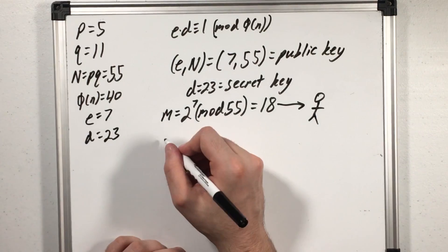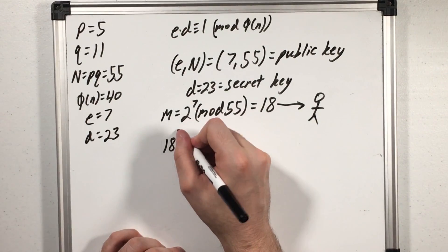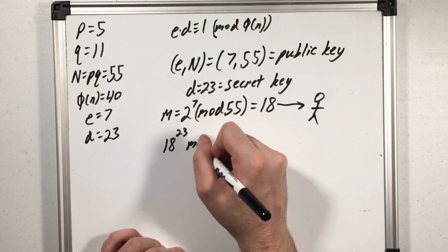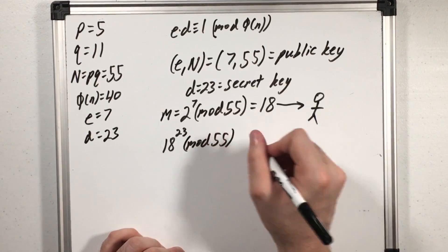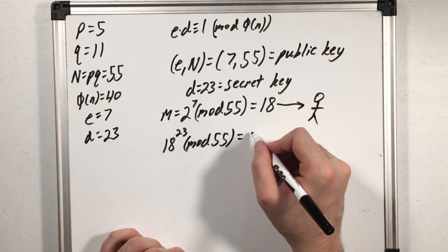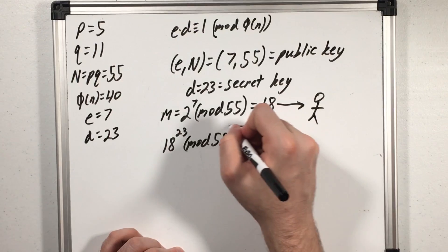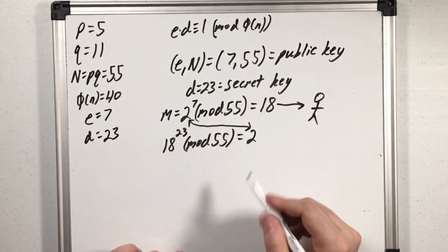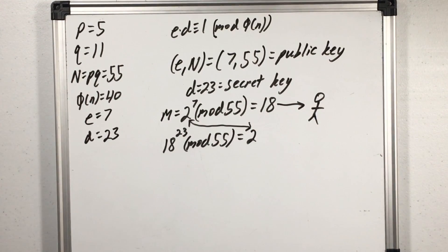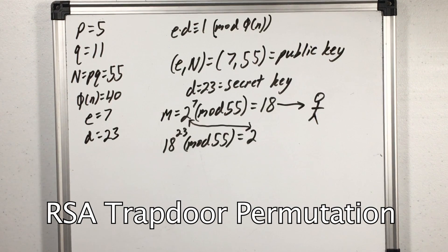Then all I do is take their encrypted message and raise it to my secret key 23 and also do that mod n. If I calculate this it gets me a value of 2 which is the exact same as the original message unencrypted and now I can see what they sent. This is the RSA trapdoor permutation.